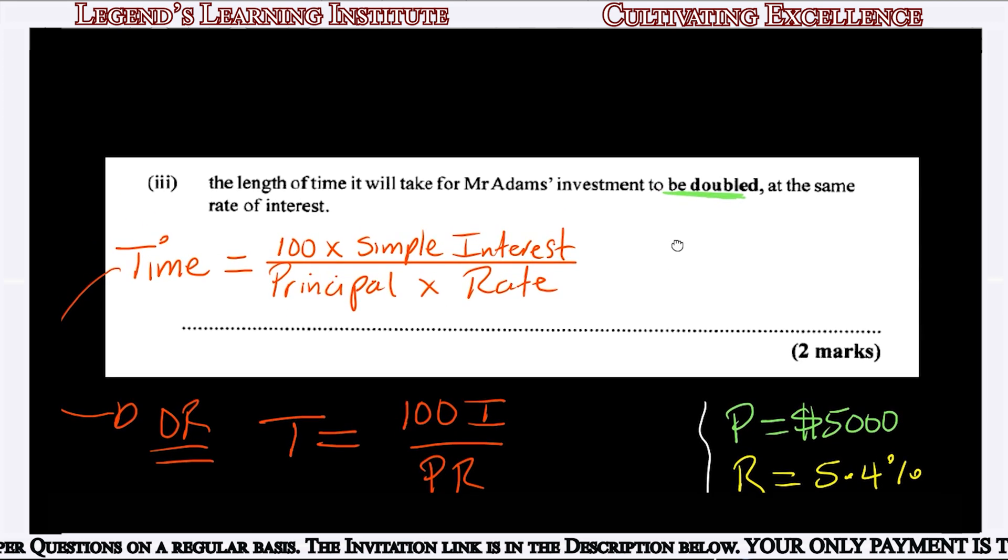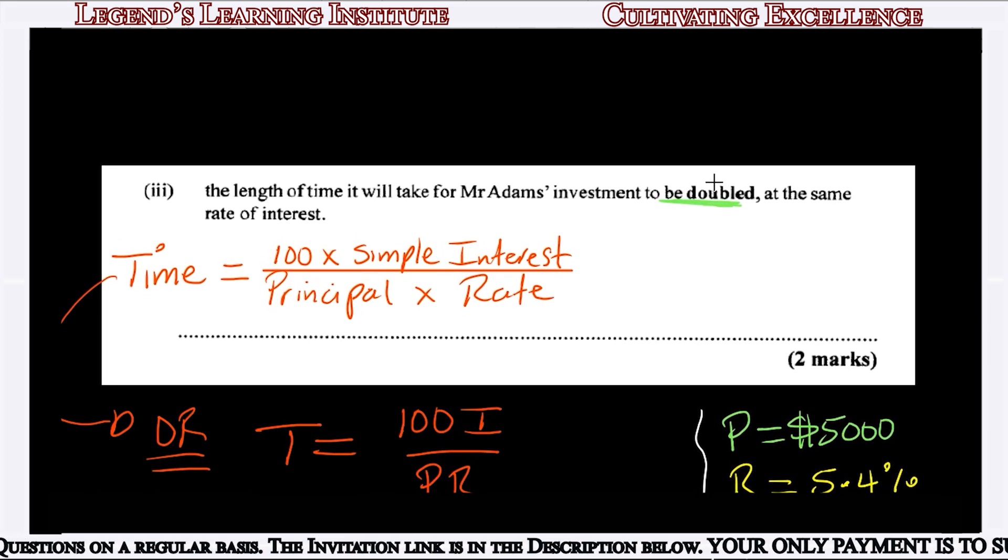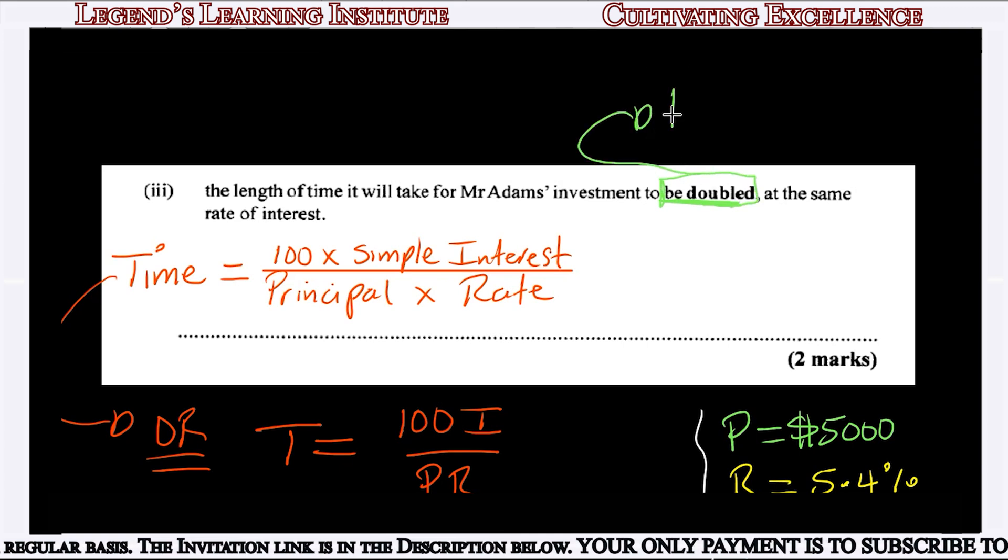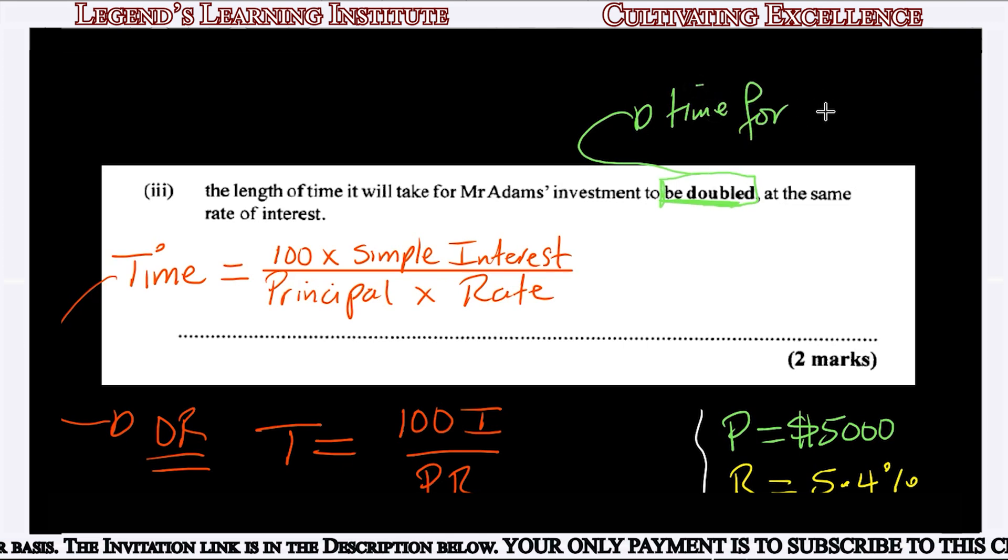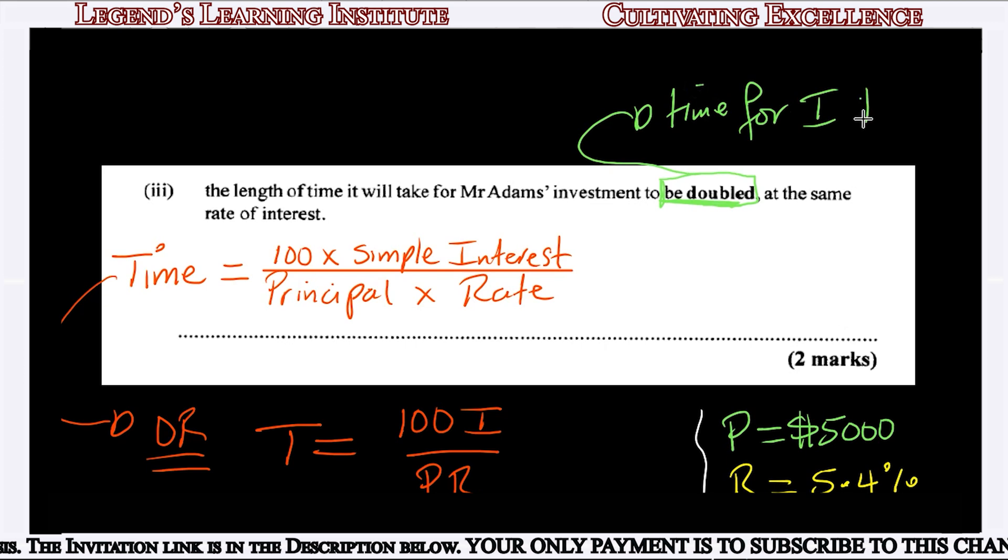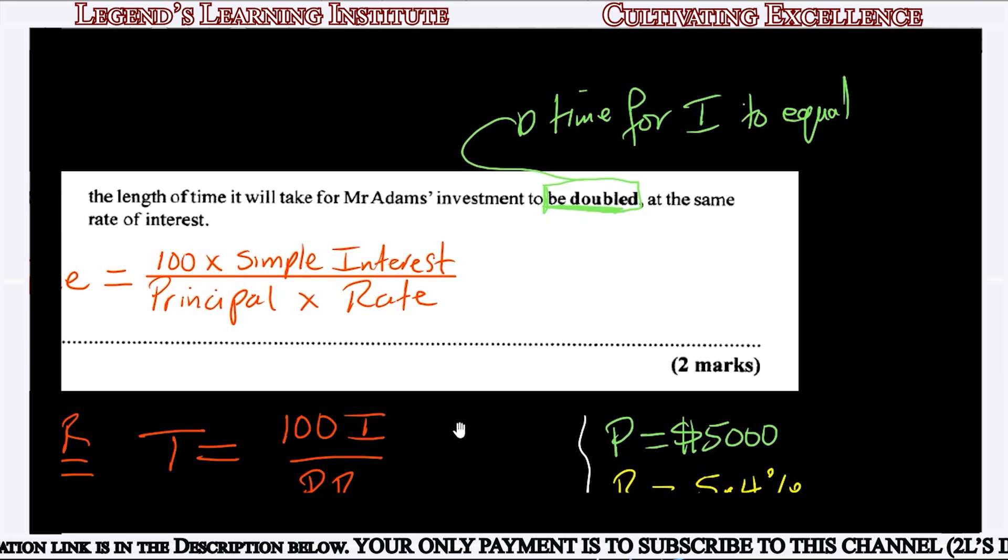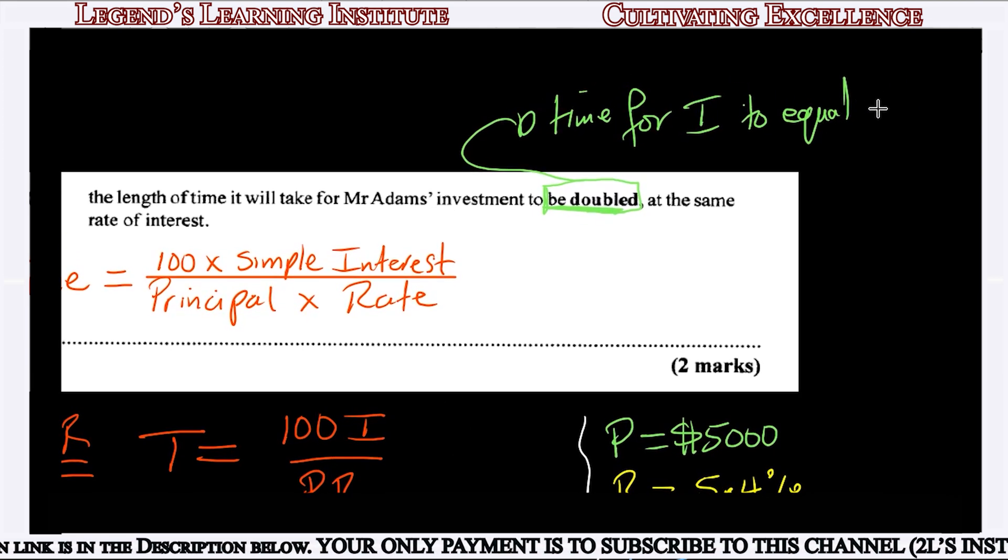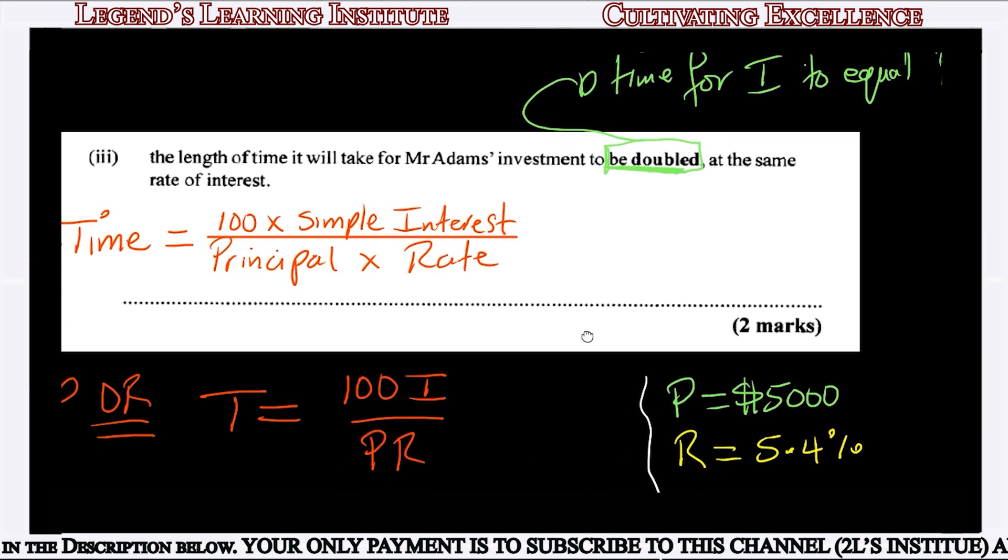When we say the time taken for his investment to be doubled, we mean how long will it take for him to get his investment back with an additional amount as interest equal to the investment? His investment was $5,000, so how many years to get that $5,000 plus another $5,000?